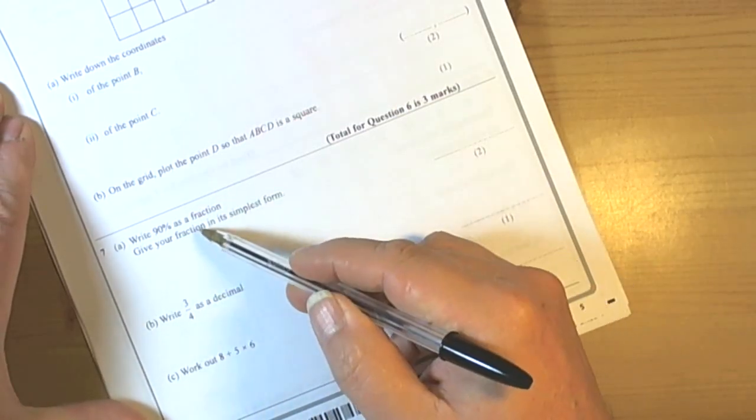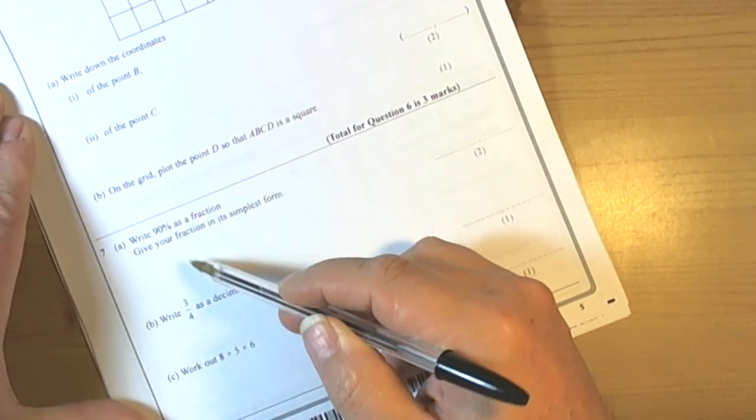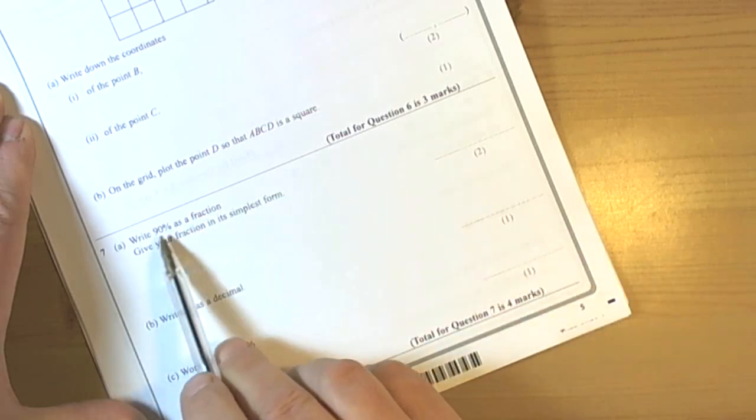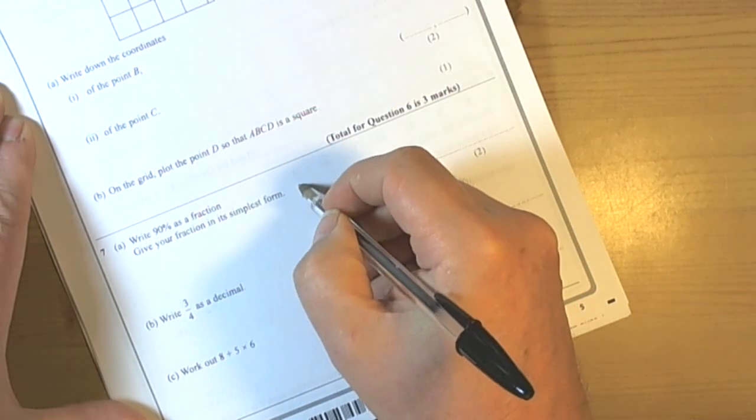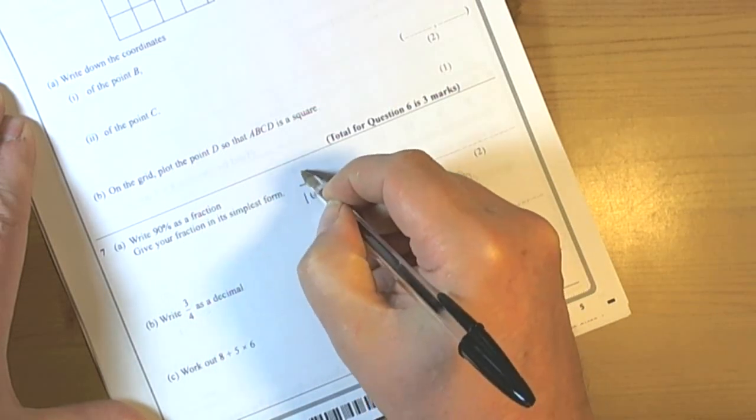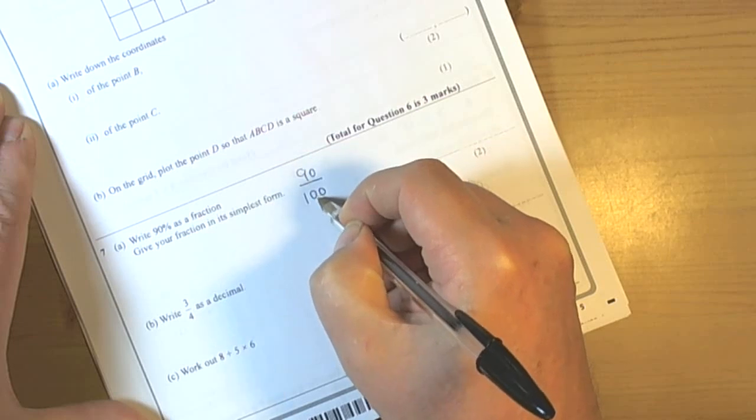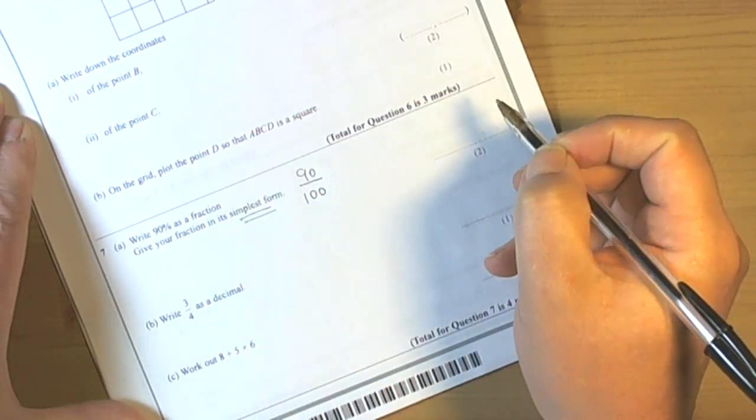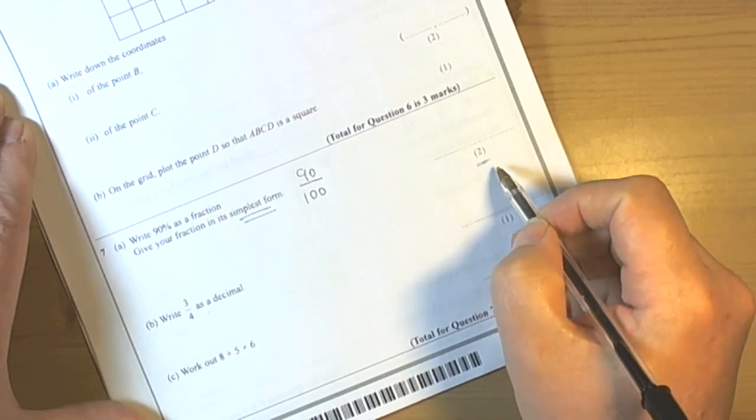This question is asking you to work with fractions, decimals, percentages and equivalents. It's saying give your fractions, so we're going to write 90% as a fraction. Percentages as fractions are out of 100, so 90% would be 90 out of 100 parts. We've got to remember it wants the simplest form. It's worth two marks so they're expecting a little bit of working out.